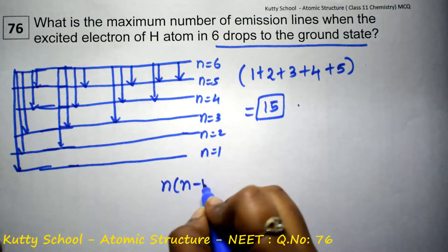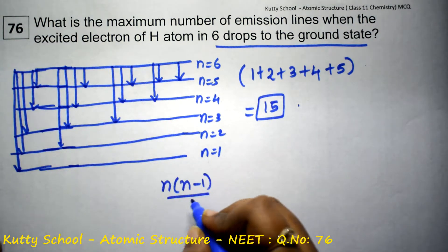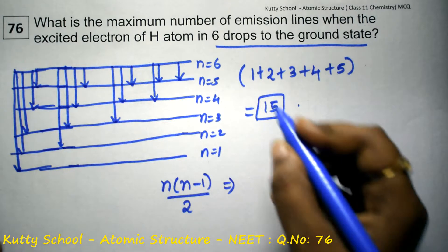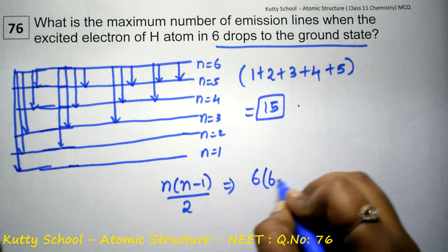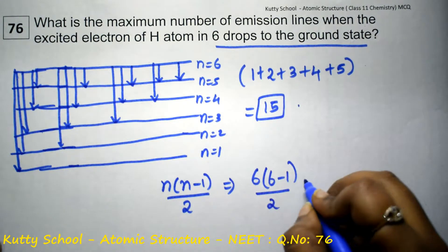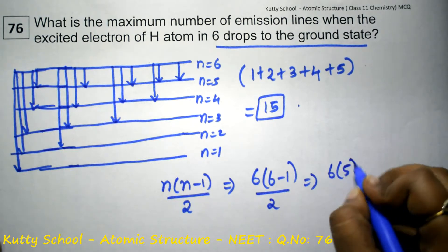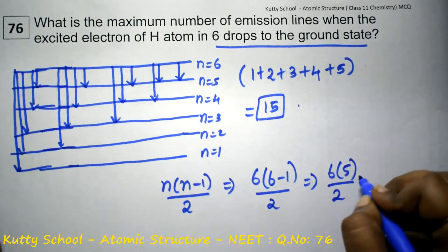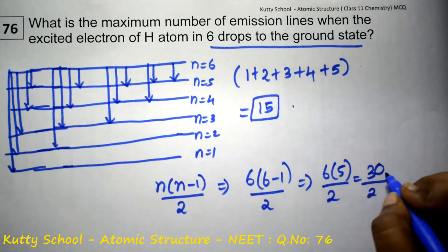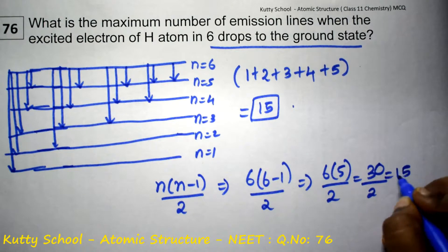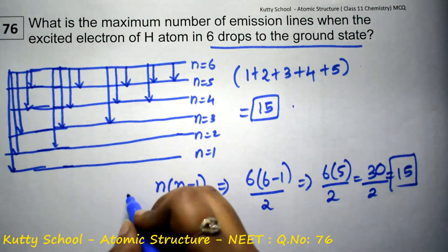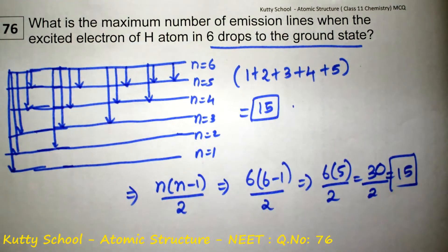The formula is N(N−1)/2. Here N is given as 6. So, 6 into (6−1) divided by 2 — that is 6 into 5 divided by 2. 6 times 5 is 30, and 30 divided by 2 is equal to 15. So, whether you use the formula or the diagram representation, both give the same answer easily.